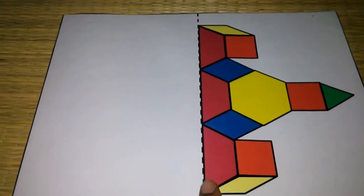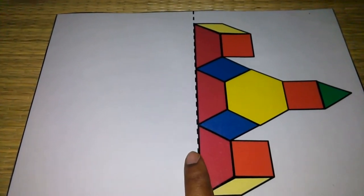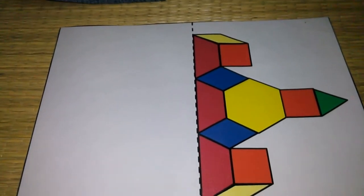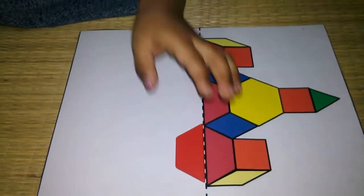What shape is this? Trapezoid. One, two, three. What about trapezoid?